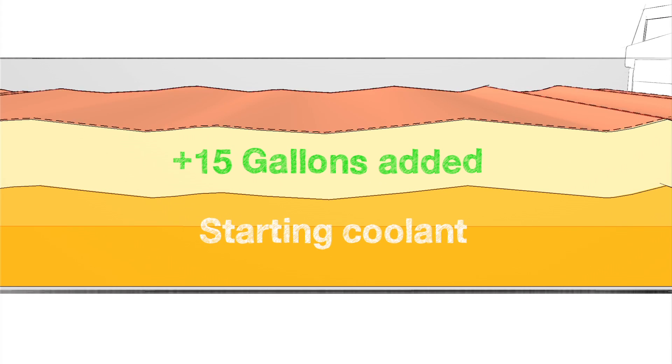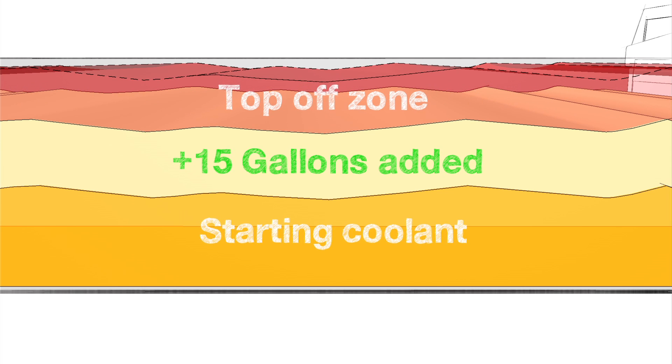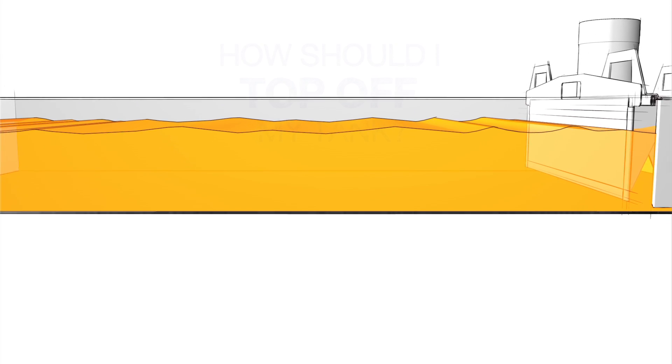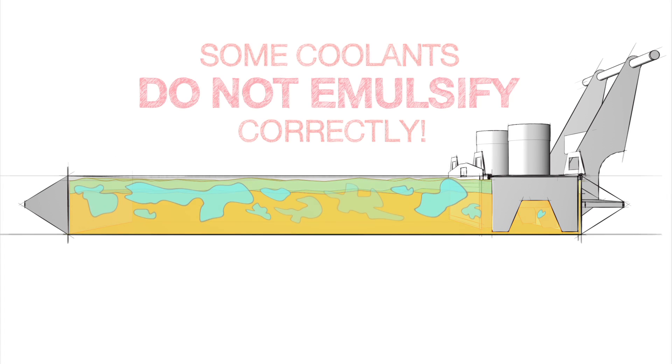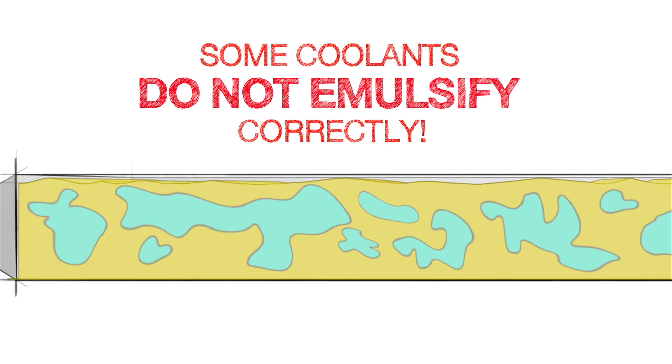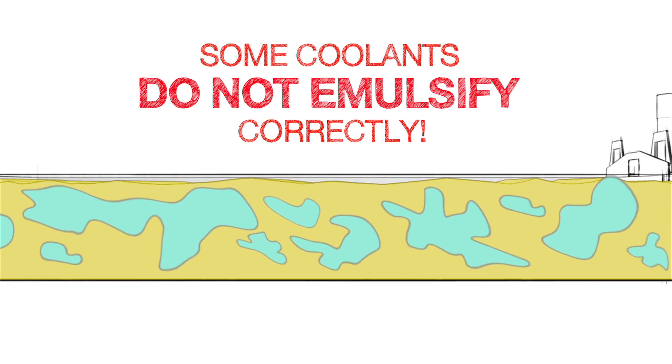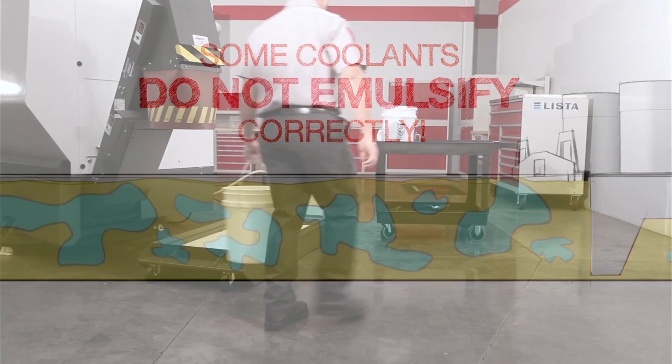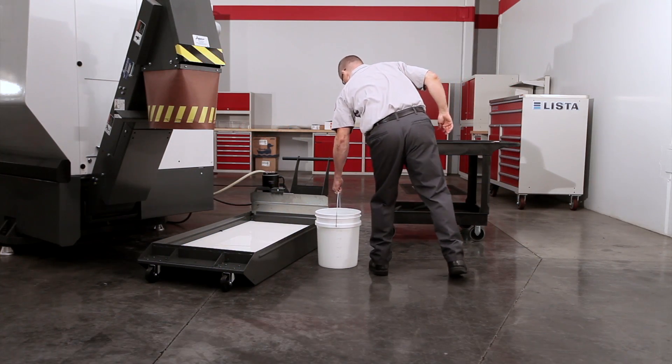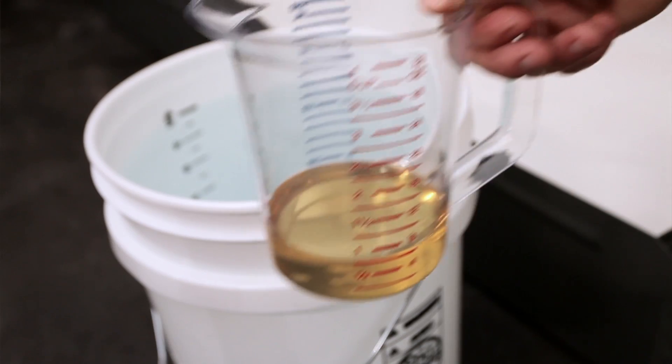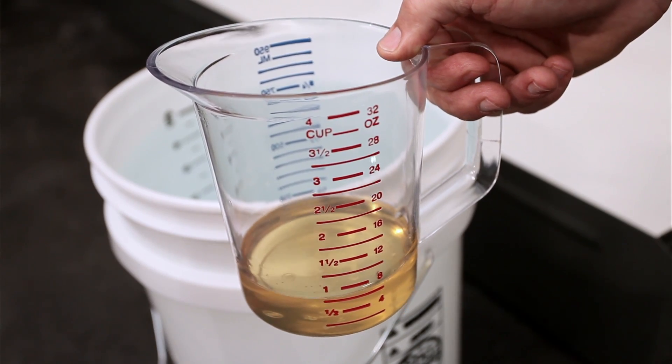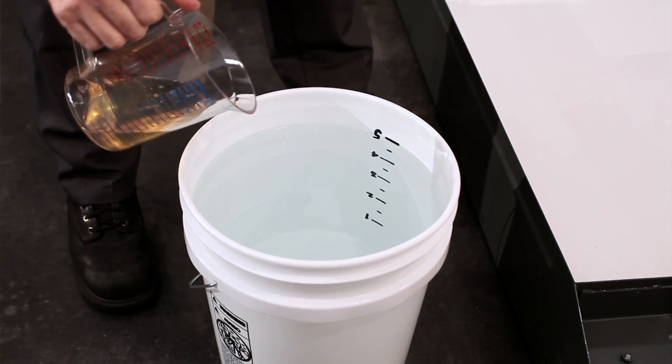We've added a total of 15 gallons and since we started at less than half full, our tank isn't filled yet. We need to top off the remainder of the tank. At this point you might think we'd recommend that you just finish filling the tank with plain water, but when you add water to some mixed coolants, it may not emulsify correctly. So we will take the safest path and top off our tank with a low concentration mixture.